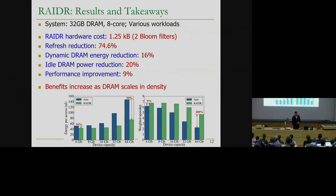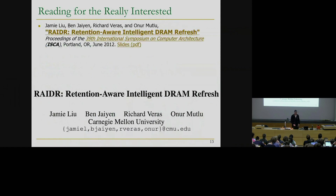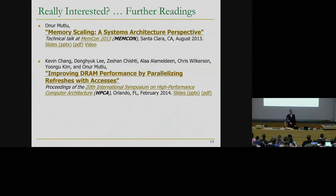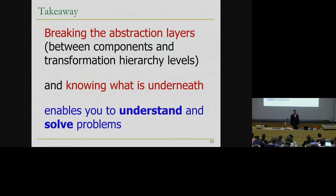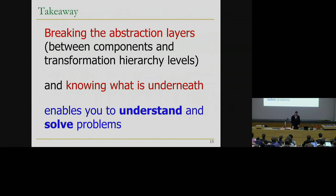For those really interested, they can go and read this paper, and there are even more references for those interested further - those are not required readings, but we encourage you to look at them. The takeaway here is that breaking the abstraction layers in the transformation hierarchy and knowing what's underneath can lead to better understanding and help you solve important problems, as we see for the refresh case for energy consumption and performance. Any questions before we go to the last mystery?